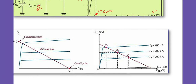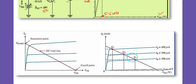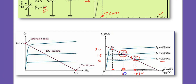With increasing IB, as IC increases, VCE goes on decreasing — they are reciprocal. The Q-points are: IC of 10, 15, 20 milliamperes corresponding to VCE of 7.8, 6.7, and 5.6 volts respectively. That is why the load line has a negative slope — it shows that VCE and IC are inversely related. This line is called the load line.